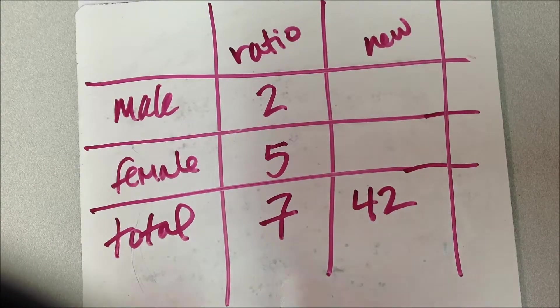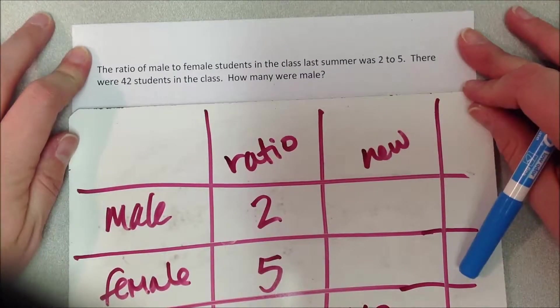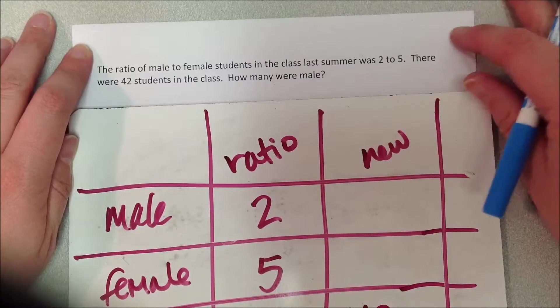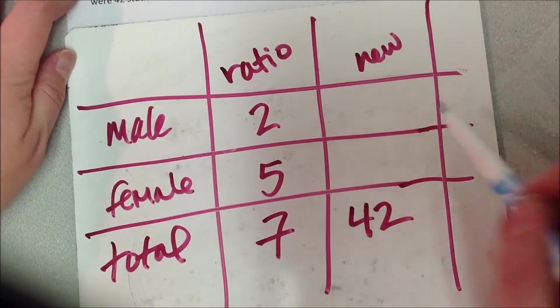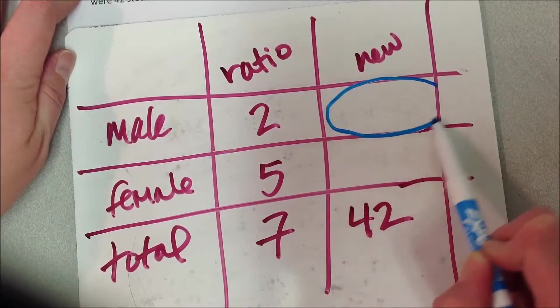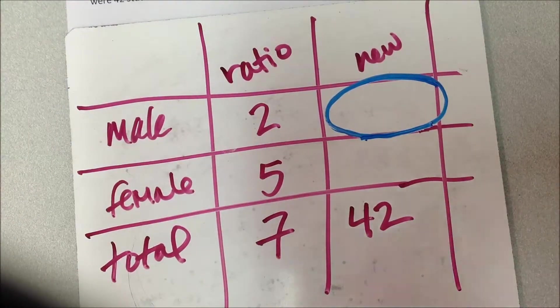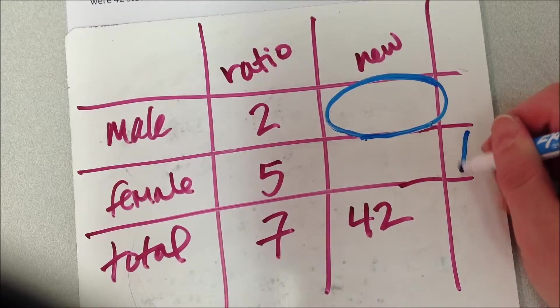So what does the question ask me, though? Let's look at that again. They tell me the total number of students in the class, and then they say how many were male. So that means they're asking me this. And you might be thinking, how do we solve that? That makes no sense.